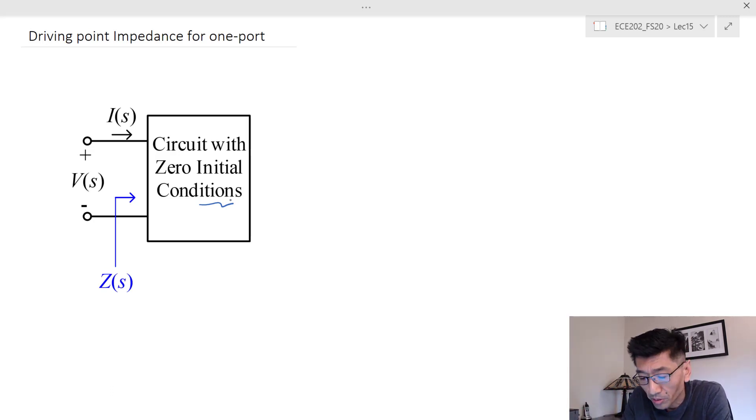There are no sources inside this network. There's only one pair of nodes connected to the circuit. This pair of nodes has the voltage across and the current, so in this case the driving point impedance...